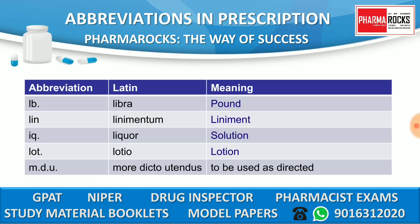LB means 'libra,' meaning pound. LIN means liniment. LIQ means liquor, meaning solution. LOT means 'lotio,' meaning lotion. MDU means 'more dicto utendus,' meaning to be used as directed.